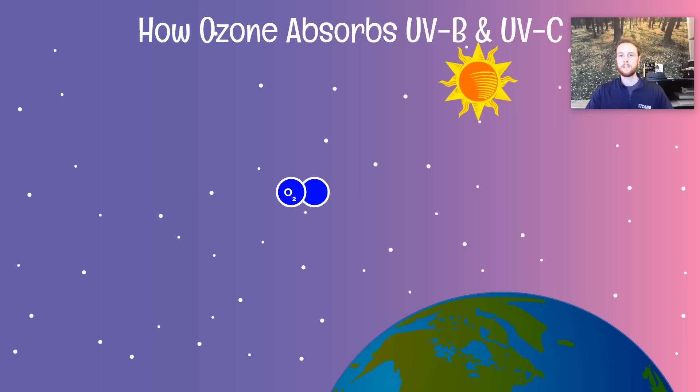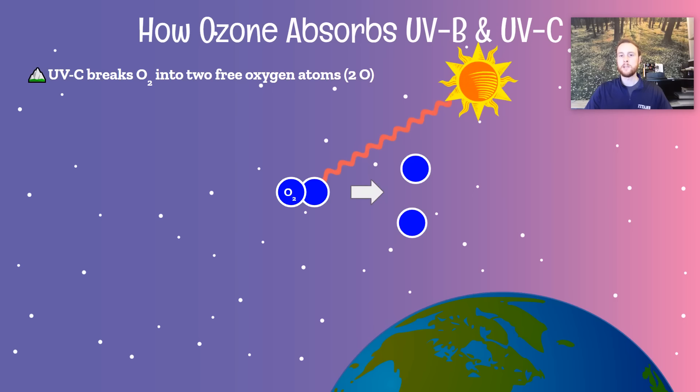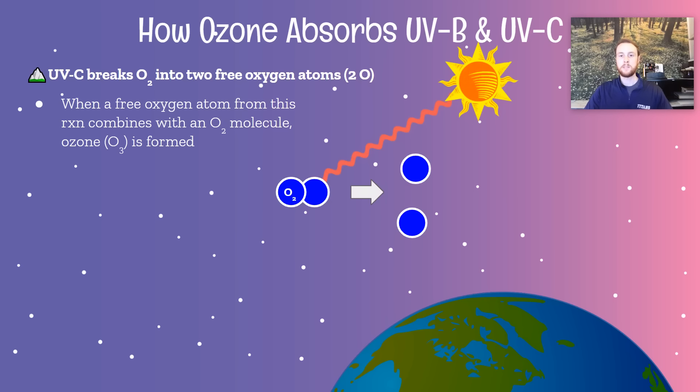Now we're going to go down to the molecular level to understand how ozone protects organisms on Earth from UVB and UVC radiation. We have to understand how ozone forms. Ozone forms from oxygen because ozone is just O3 — three oxygen atoms bound together. When UVC radiation strikes an oxygen molecule and splits it, we end up with two free oxygen atoms. Those two free oxygen atoms are going to combine with O2 in the atmosphere, and when we add a free oxygen with an O2, we end up with O3, and that's ozone.